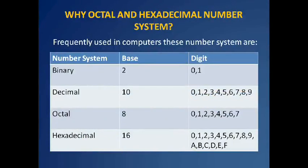Octal and hexadecimal number systems are a convenient way to represent binary numbers used by computers. Computer programmers often need to write binary quantities, but writing a binary number such as 100101101001 is tedious and prone to error. Therefore, binary quantities are written in base 8 (octal) or, more commonly, base 16 (hexadecimal) formats.